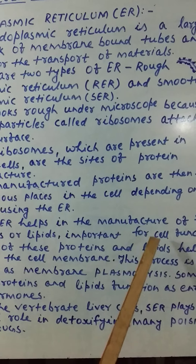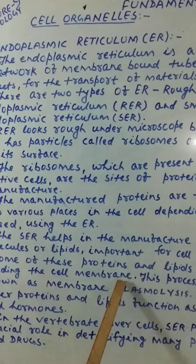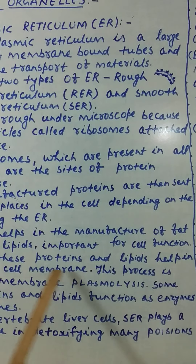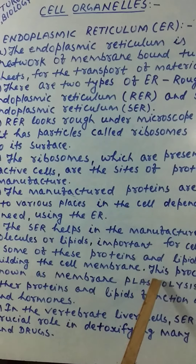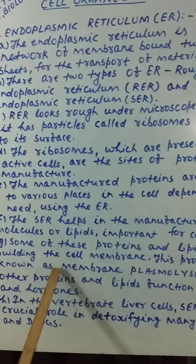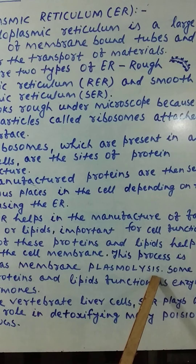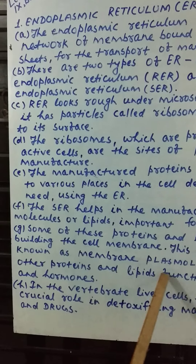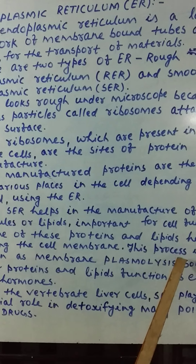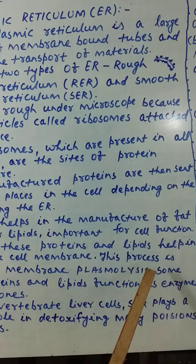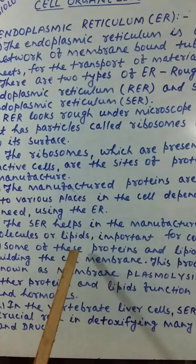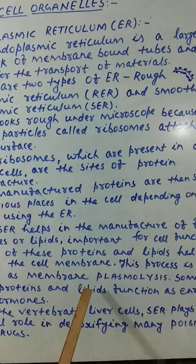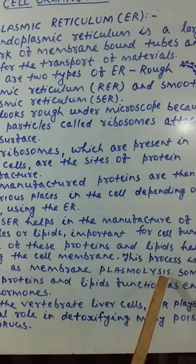The proteins and lipids formed by the smooth endoplasmic reticulum and rough endoplasmic reticulum help in building the cell membrane. This process is known as membrane plasmolysis. You should know this term — membrane plasmolysis — the formation of plasma membrane with the help of smooth and rough endoplasmic reticulum.